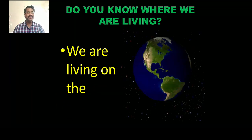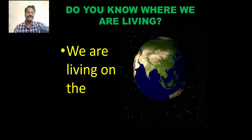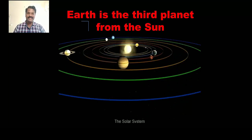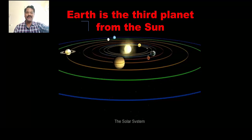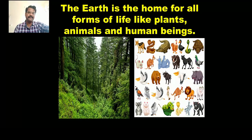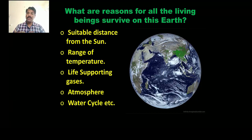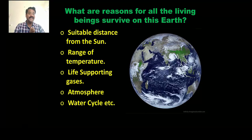Do you know where we are living? Yes, exactly, we are living on the earth. The earth is the third planet from the sun. You can watch the video and identify where exactly the earth is located. The earth is the home for all forms of life like plants, animals, and human beings. What are the reasons for living beings to survive on this earth?